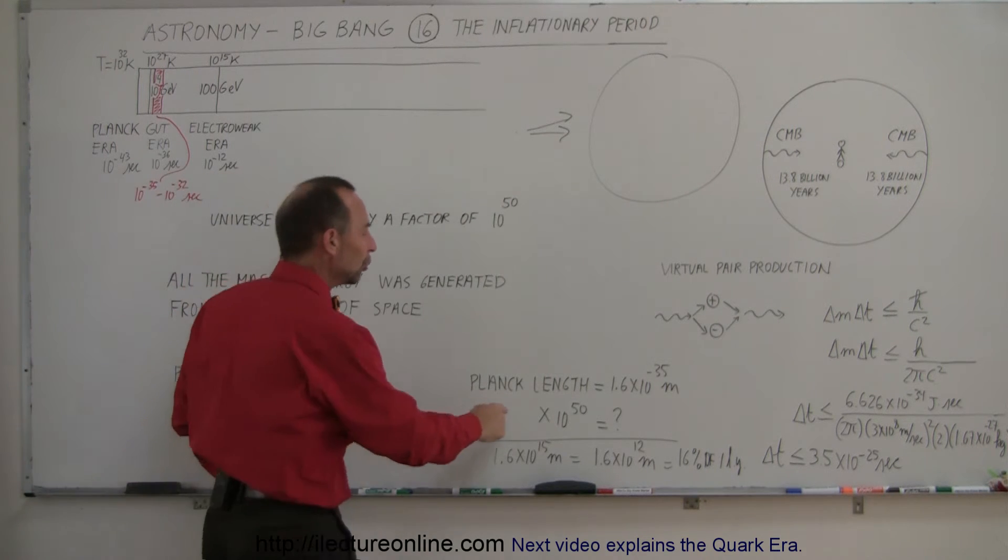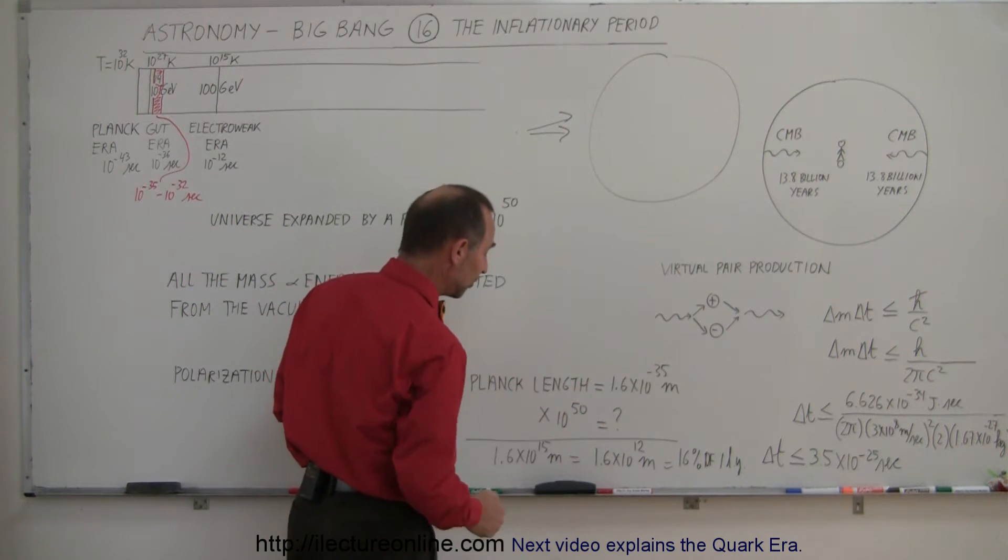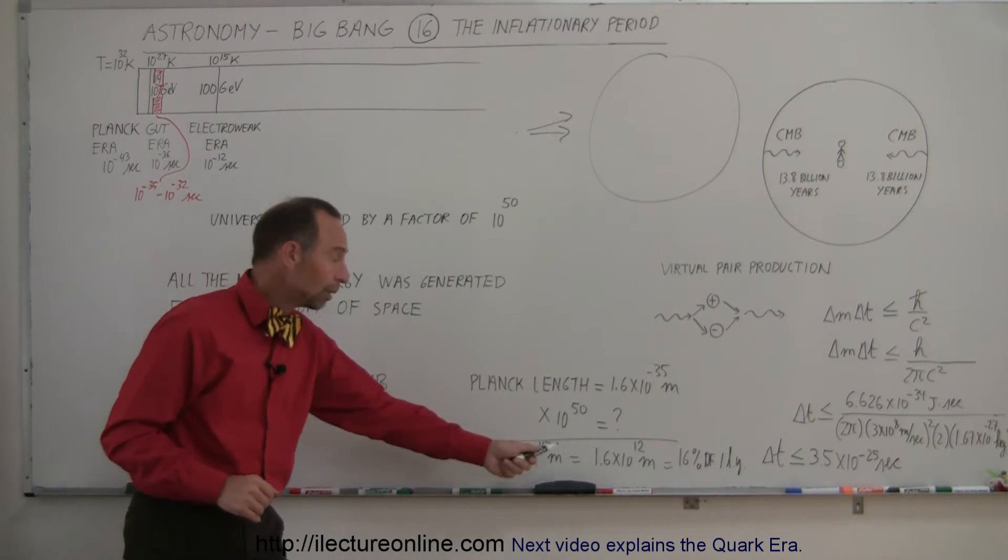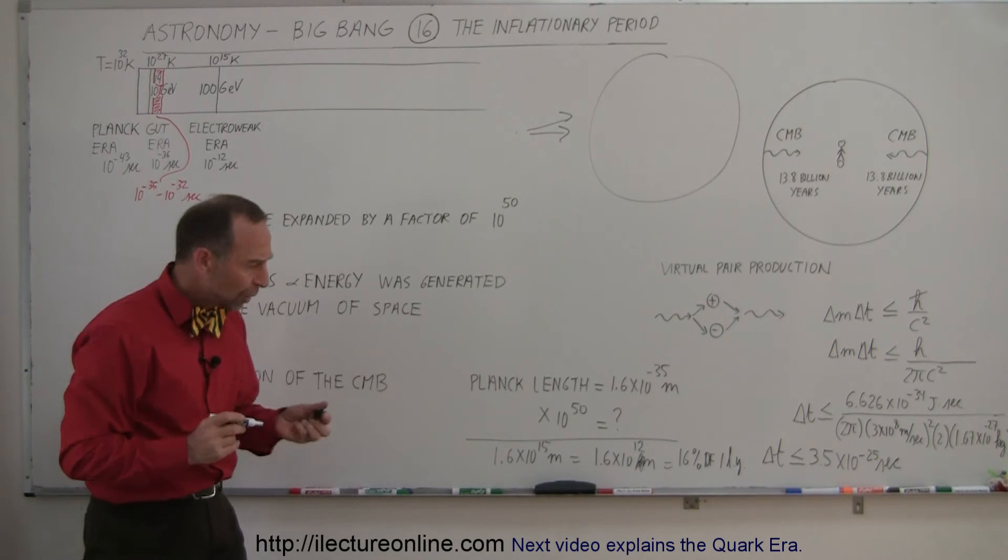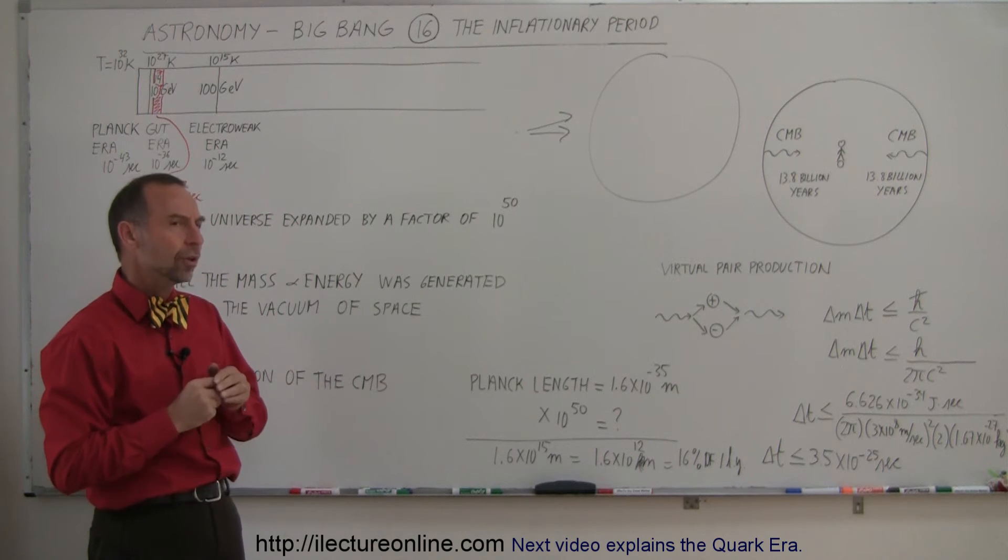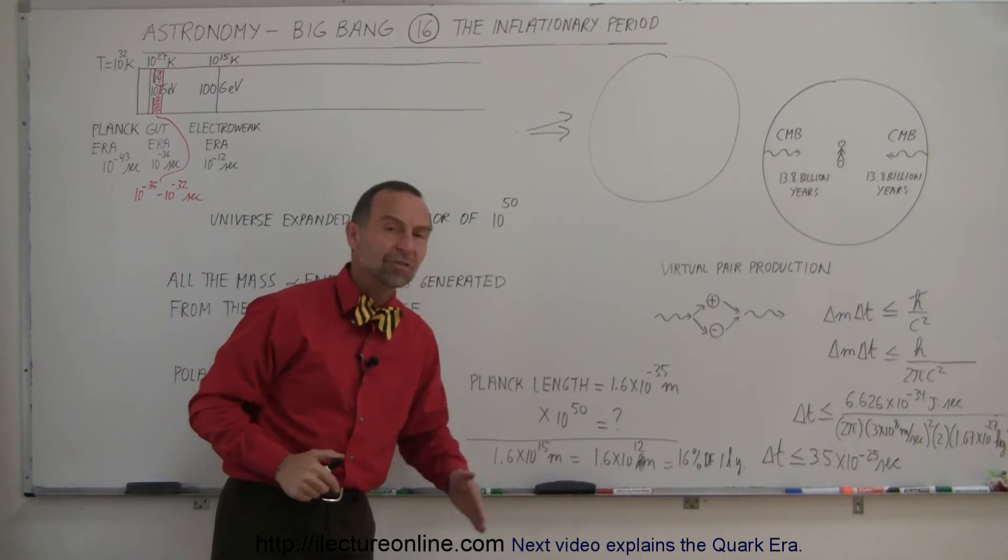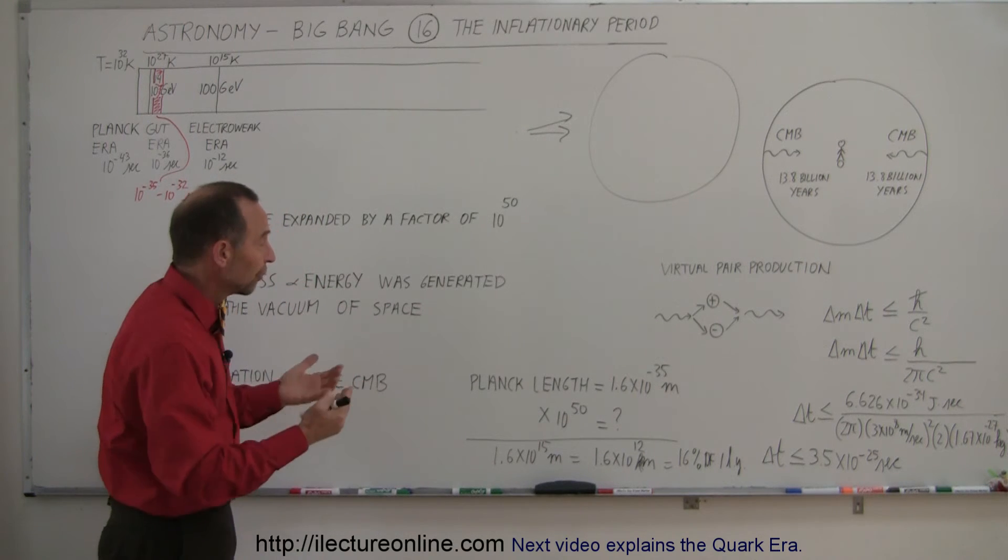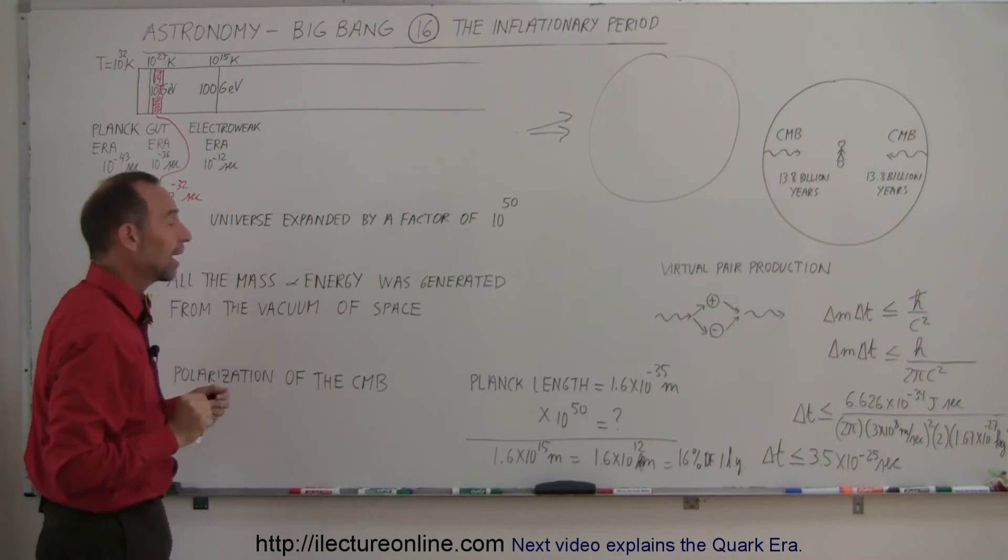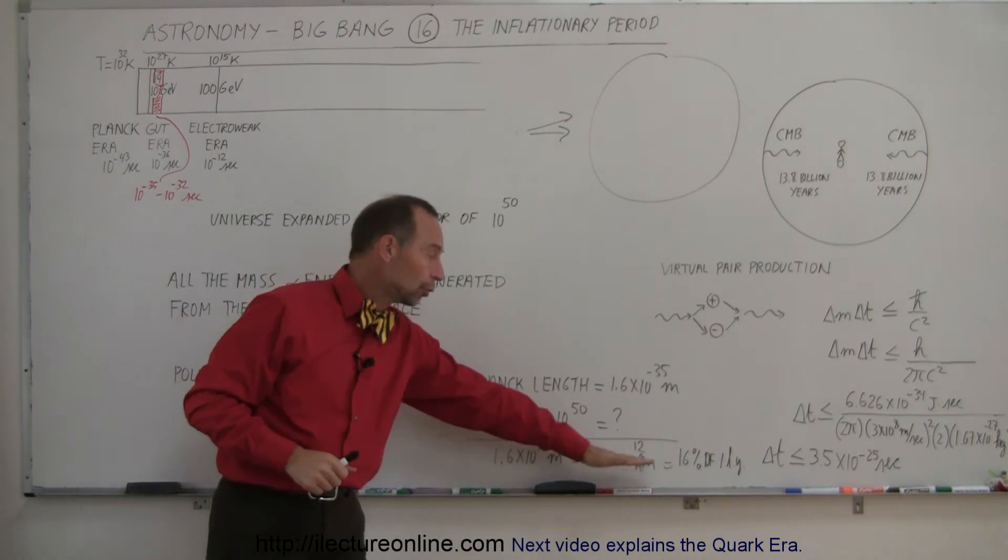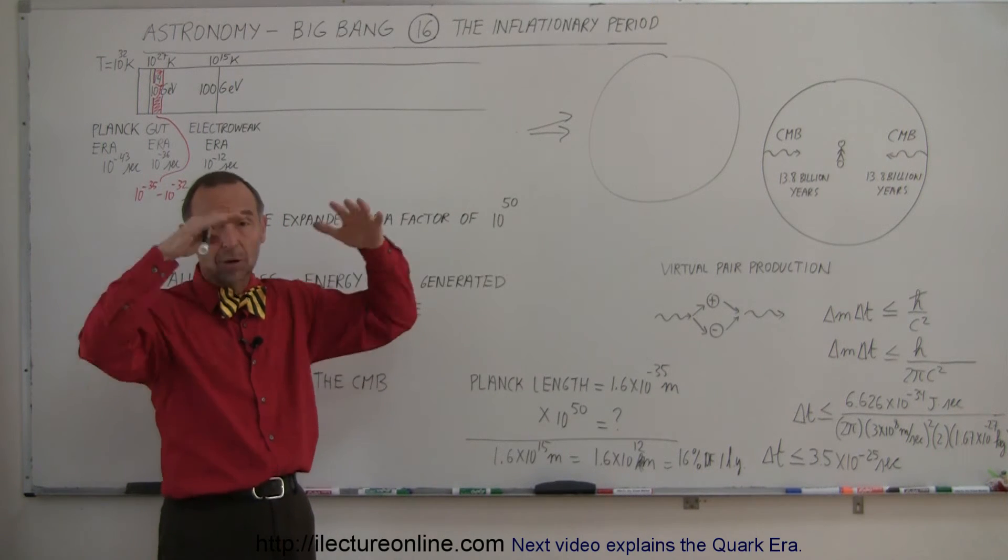Since the universe had already been expanding from 10 to the minus 43 seconds to 10 to the minus 36 seconds before the inflation era started, we can imagine that the universe must have been bigger than Planck length. But let's just assume it was Planck length. How much bigger would the universe be if it grew by factor 10 to the 50th? All we have to do is multiply 1.6 times 10 to the minus 35 meters times 10 to the 50th, and we get 1.6 times 10 to the 15th meters, or 1.6 times 10 to the 12th kilometers. That would be 1.6 trillion kilometers. A light year is about 10 trillion kilometers, so this size would be 16% of a light year. If the universe started at Planck length and inflated, it would have grown to something in diameter of 16% of a light year, which is much bigger than our current solar system.